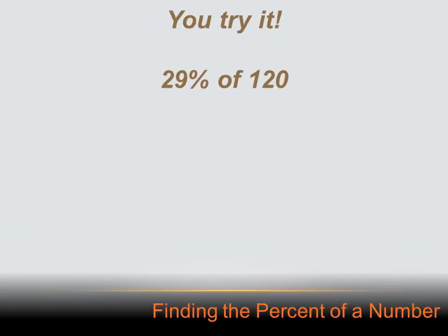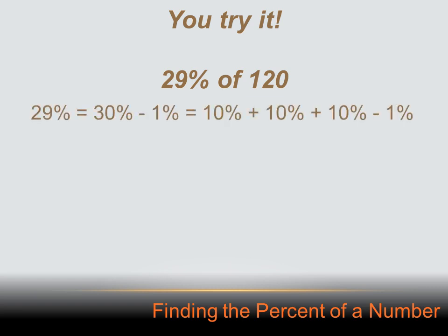Try this one: 29% of 120. Well, 29% equals 30% minus 1%, which also equals 10% plus 10% plus 10% minus 1%. 10% of 120 is 12. I've got three of those 12s, but then I've got to subtract 1% of 120, which is 1.2. So 12 plus 12 plus 12 equals 36, and 36 minus 1.2 is 34.8.